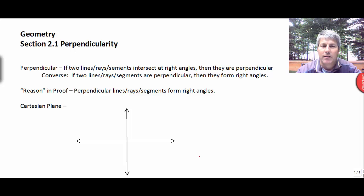Welcome back. In this video, we're going to study the concept of perpendicularity. By definition, perpendicularity is two lines, rays, or segments that intersect at right angles. So the converse, since it's a definition, there's a converse.